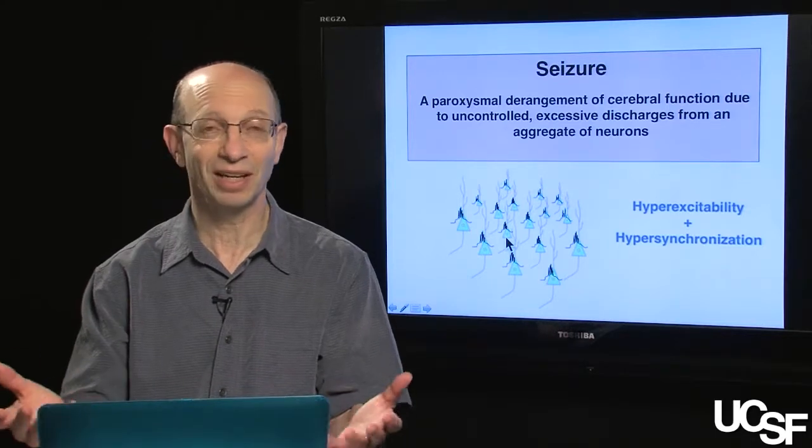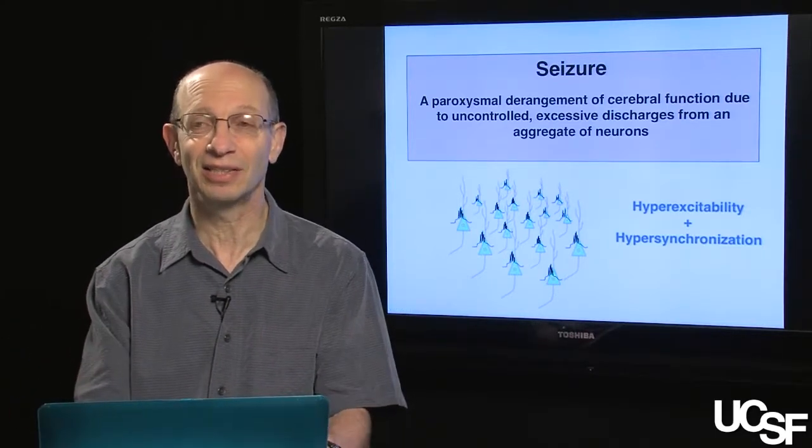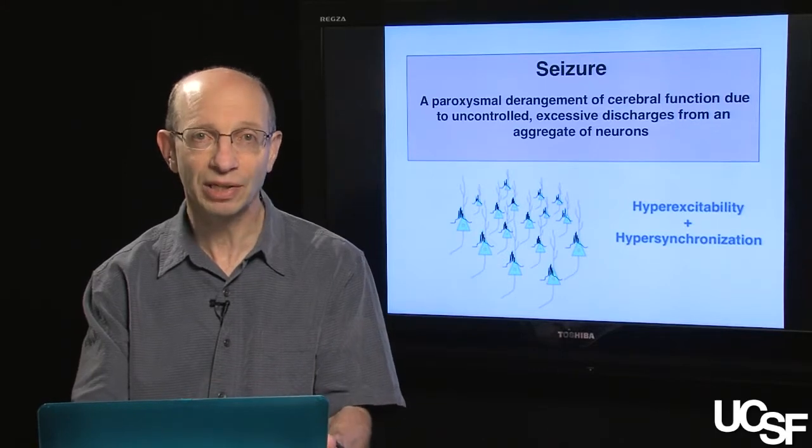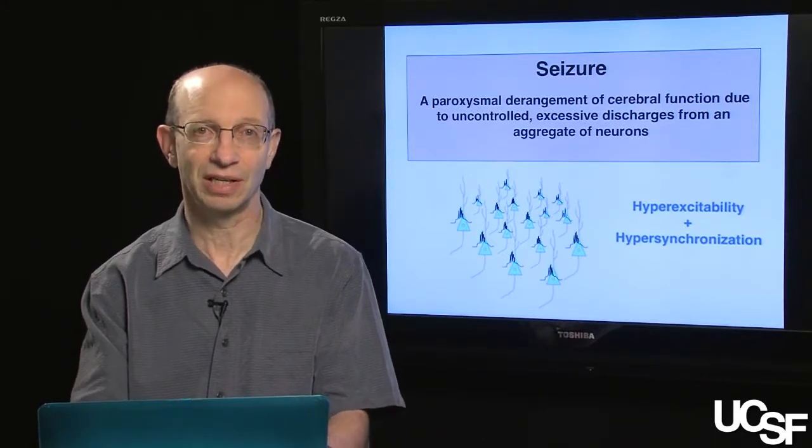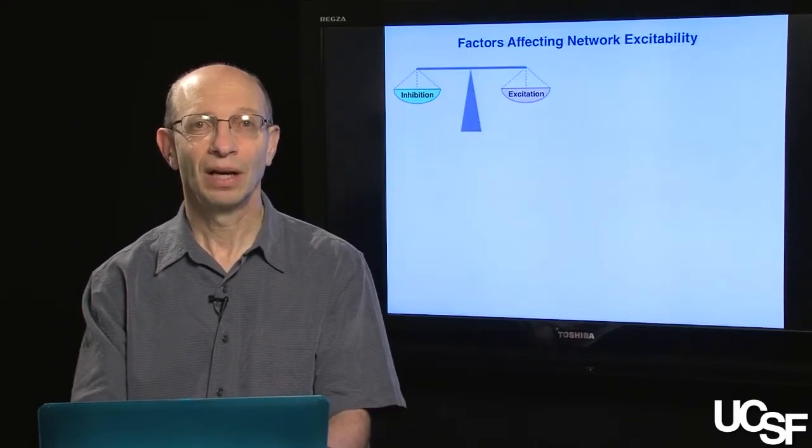The key thing about a seizure is that there is both hyperexcitability, that is these PDSs with trains of action potentials, and hypersynchronization, that is large groups of neurons are firing at relatively the same time. This is really as simple as it gets. This is really what happens during a seizure, hyperexcitability and hypersynchronization.